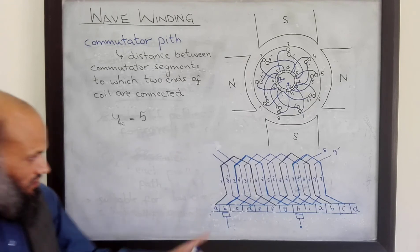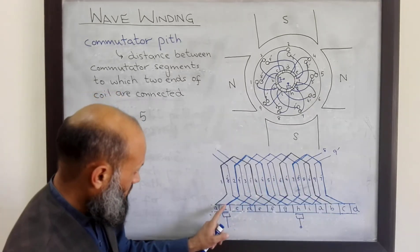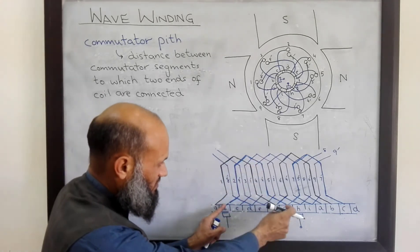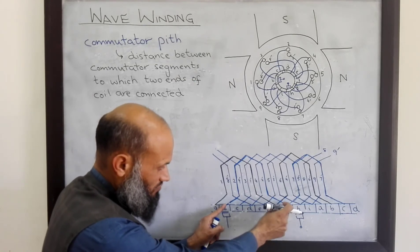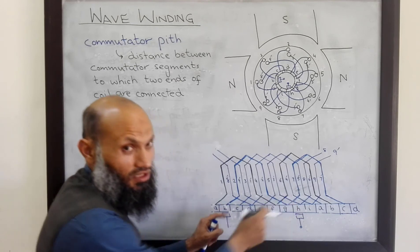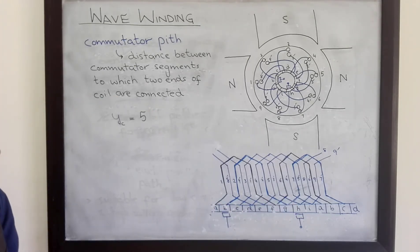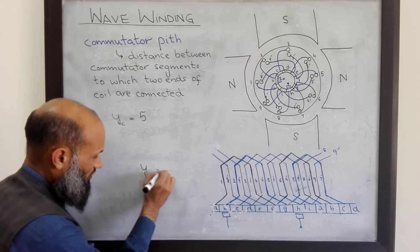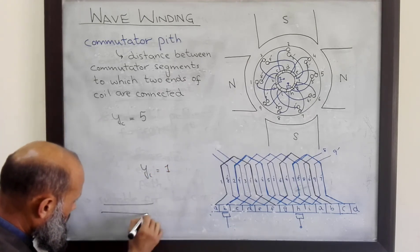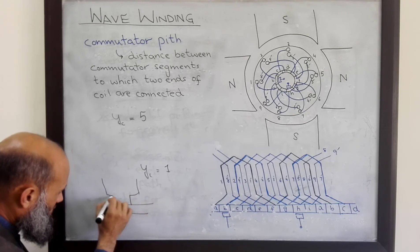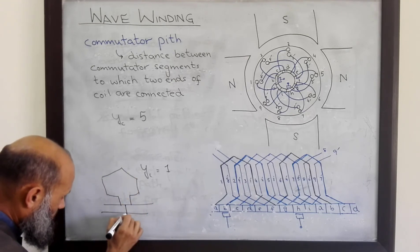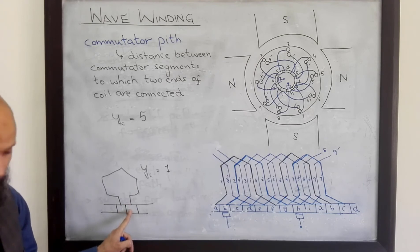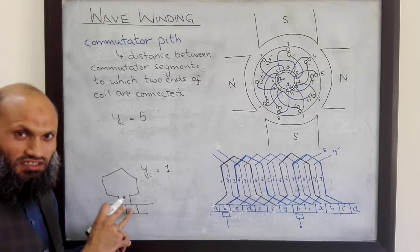Commutator pitch is denoted by the symbol Yc. Yc is 5 for this case. This is the same for all coils — for example, if you look at coil 2, one end is connected to commutator segment B and the second end is connected to G, so the distance between the commutator segments is 1, 2, 3, 4, 5. What is commutator pitch for a lap-wound DC machine? For a lap-wound DC machine, commutator pitch is always 1 — that is, the ends of the coil are connected to adjacent commutator segments.